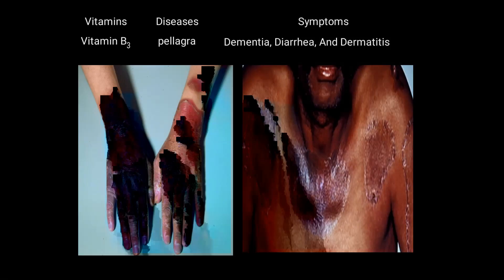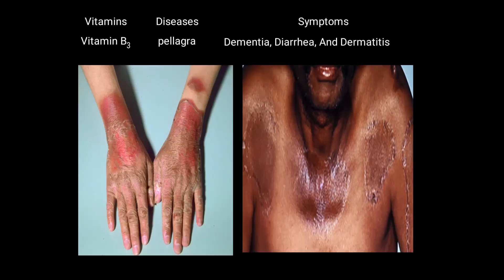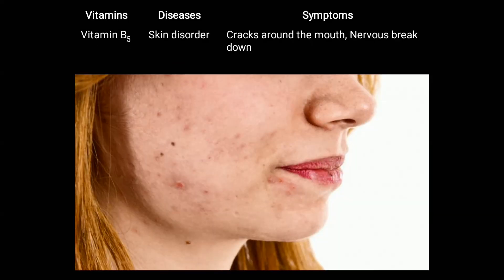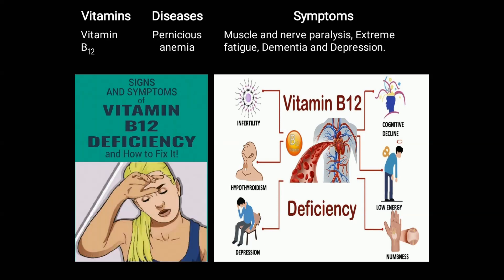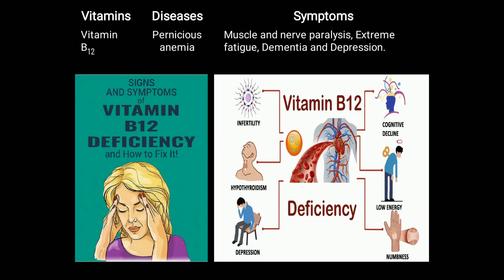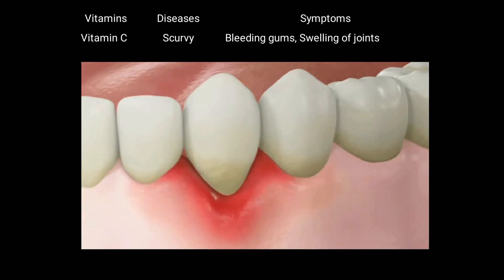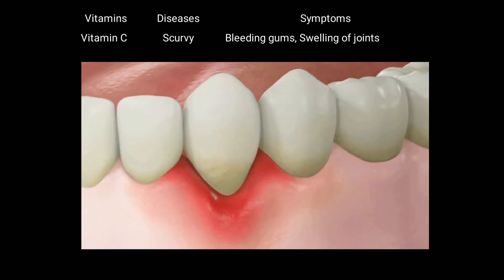Deficiency of vitamin B3 causes pellagra, with symptoms like diarrhea. Vitamin B5 deficiency causes skin disorders, with symptoms like cracks around the mouth and nerve breakdown. Deficiency of vitamin B12 causes anemia, with symptoms including muscle and nerve paralysis, extreme fatigue, and sometimes depression. Deficiency of vitamin C causes scurvy, with symptoms of bleeding gums, swelling of the joints, etc.